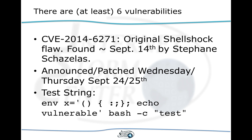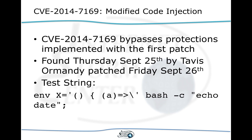When we first recorded the webcast on Thursday we already knew there was a second vulnerability. This second problem had not been mitigated by a patch back then, but as of Friday late or Saturday you should have received a patch from your Linux distribution that fixes this problem as well. So for these first two vulnerabilities we do have patches available. This second vulnerability is really just a variation of the first that wasn't addressed in the original patch.